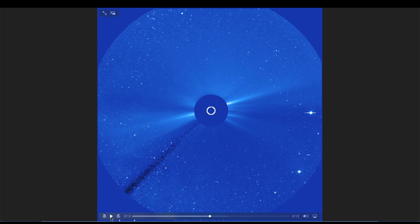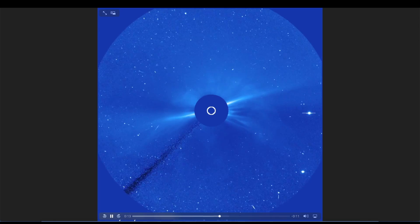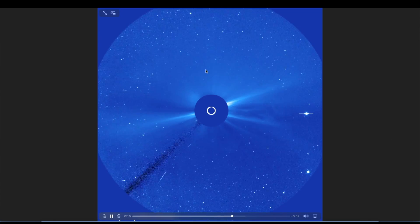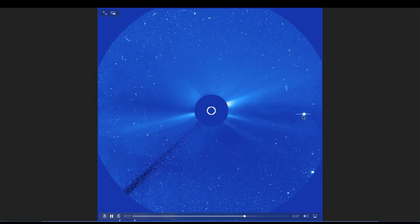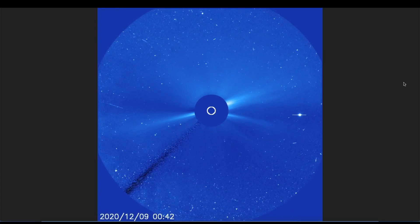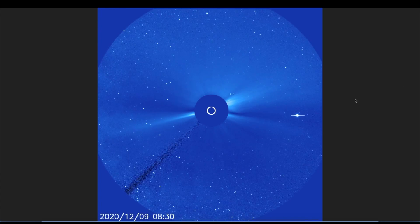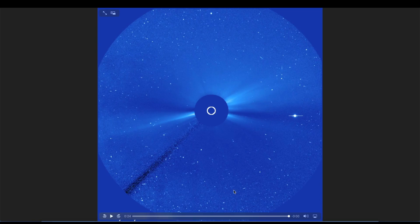Here it is over here at the SOHO LASCO C3 instrument. There went the solar flare, again visible from SOHO. That is Mercury going behind the Sun. That was a 360-degree halo.